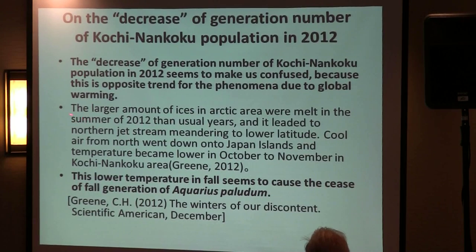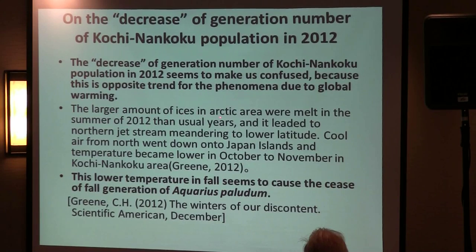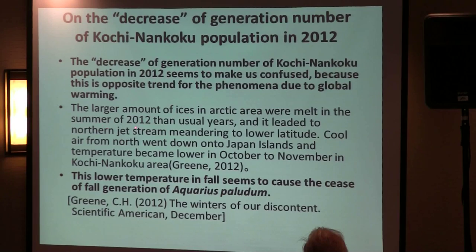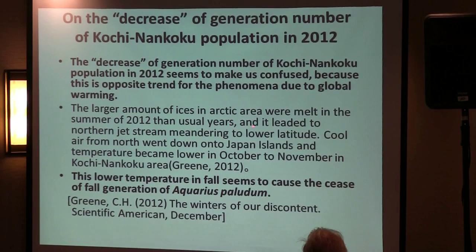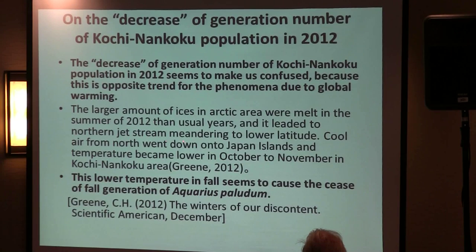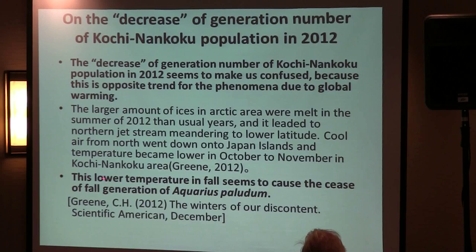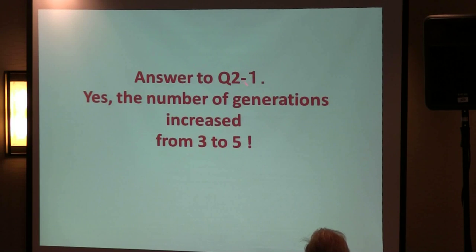Probably, a larger amount of Arctic ice melted in summer 2012 than usual, leading to northward jet stream meandering to lower latitudes. Cool air from the north moved over Japan, and temperature became lower in fall. This lower temperature in fall seems to have caused the reduction to four generations in this species. Answer to question 2.1: yes, the number of generations increased to five.